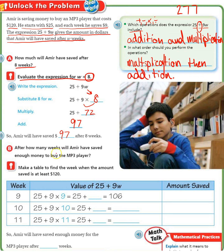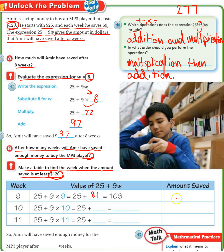Part B: after how many weeks will Amir have saved enough money to buy the MP3 player? We can make a table to find the week when the amount saved is at least $120, because the MP3 player costs $120. We know after 8 weeks he'll have $97. After 9 weeks, he'll have 25 plus 81, which is $106.